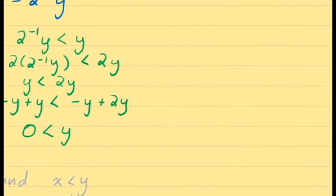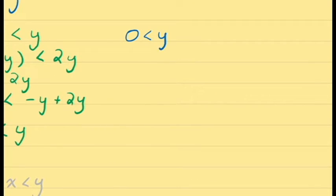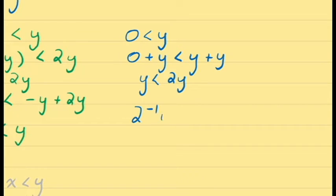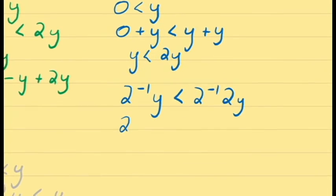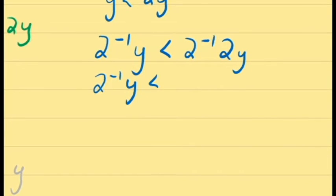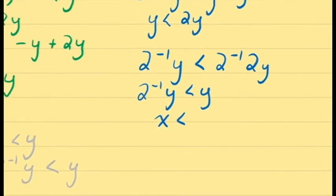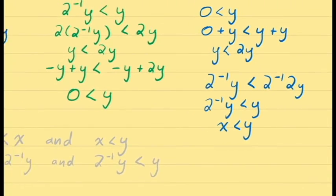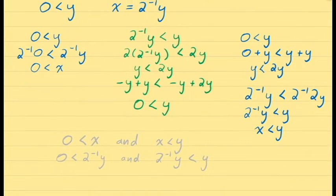Working this backwards into a forward demonstration: starting from our assumption that 0 is less than y, we add y to both sides, giving us y is less than 2y, and then multiply both sides by 2 inverse, giving us y over 2 — our assigned value of x — on the left-hand side, and simply y on the right-hand side. Since these demonstrations work, let's return to our proof.